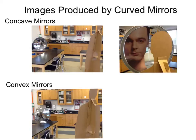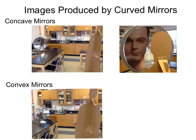Images produced by curved mirrors: here we see Sheldon looking at his image formed by a concave mirror. When he's standing very far away, you can see that he's upside down and a little bit smaller. Whereas when he comes very close to the concave mirror, his image becomes much larger and upright. If he stands far away from a convex mirror, his image is smaller but now upright. These mirrors form these different types of images by obeying the law of reflection.